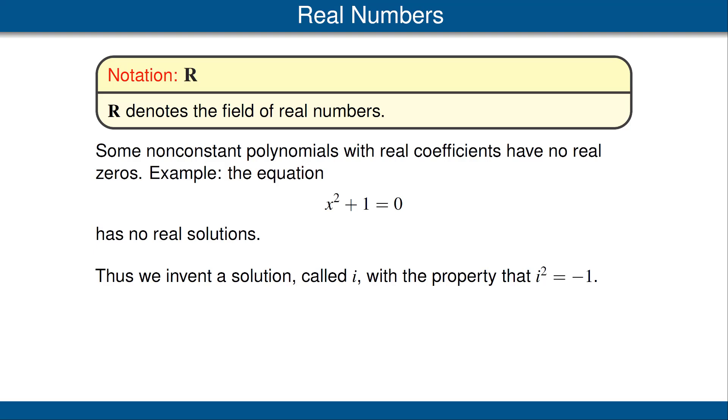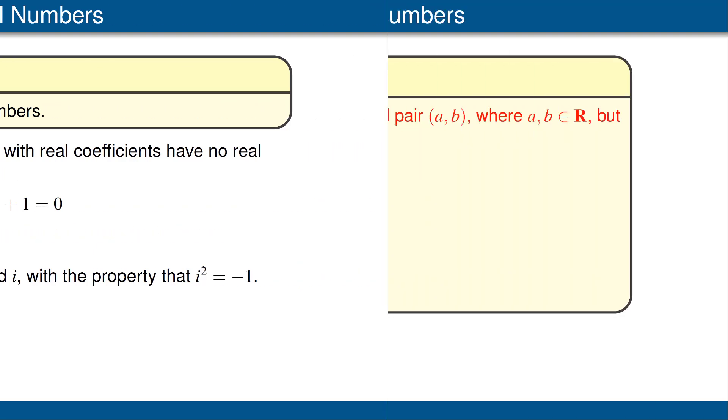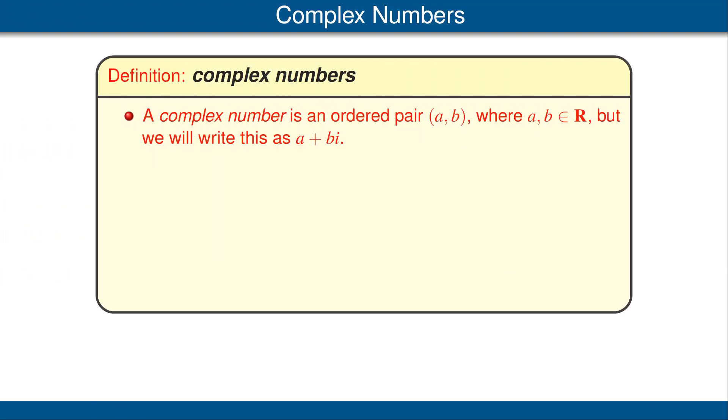Thus, we invent a solution, which we call i. We can actually make this rigorous. Here's how to do that. A complex number is formally an ordered pair (a, b), where a and b are real numbers. But we will write this in the much more suggestive notation of a + bi.